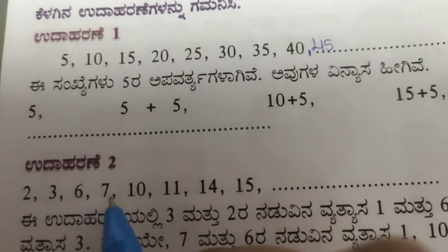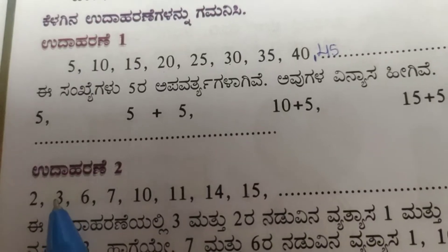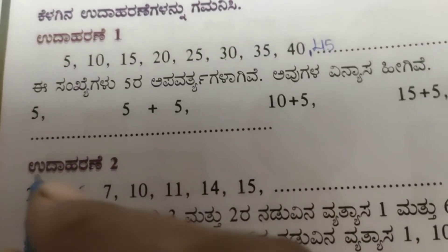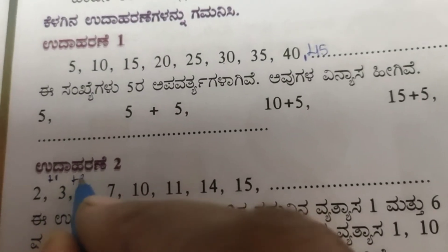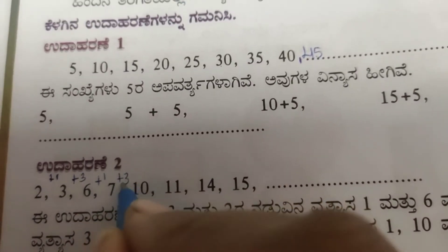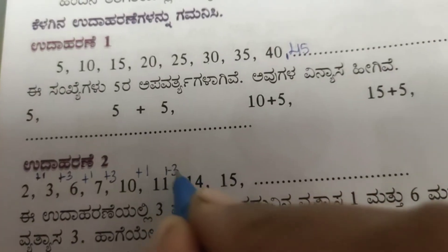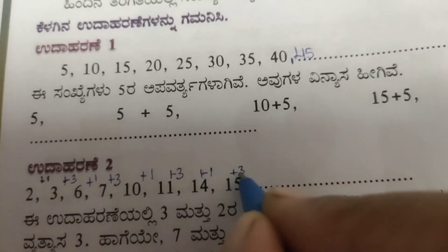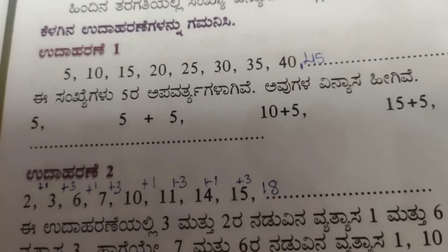Second example: 2, 3, 6, 7, 10, 11, 14, 15. Here the pattern is: 2 plus 1 is 3, 3 plus 3 is 6, 6 plus 1 is 7, 7 plus 3 is 10, 10 plus 1 is 11, 11 plus 3 is 14, 14 plus 1 is 15, 15 plus 3 — next number will be 18. This is how the pattern continues.